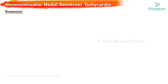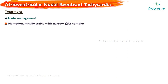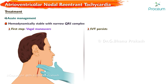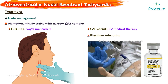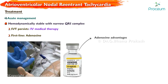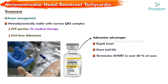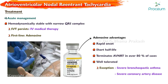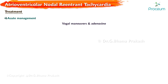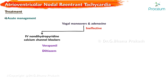Acute management: if hemodynamically unstable, perform electrical cardioversion. If hemodynamically stable with narrow QRS complex, the first step is vagal maneuvers. If supraventricular tachycardia persists, intravenous medical therapy with first-line adenosine is used if no contraindications are present. The advantages of adenosine include rapid onset and a short half-life. Adenosine terminates AV nodal re-entrant tachycardia in over 80% of cases, and is well-tolerated except in patients with severe bronchospastic asthma or severe coronary artery disease. If vagal maneuvers and adenosine have been ineffective, intravenous non-dihydropyridine calcium channel blockers or intravenous beta blockers can be used.